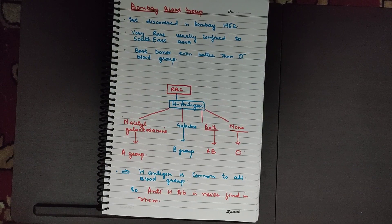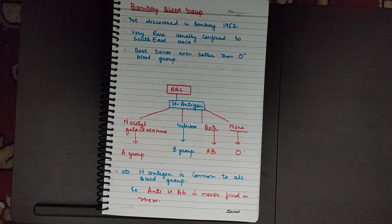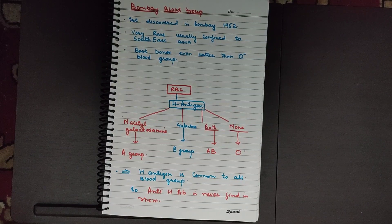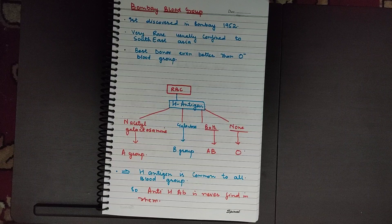The Bombay blood group was first discovered in Bombay in 1952, which is why it is known as the Bombay blood group. It is a very rare blood group, usually confined to Southeast Asia. It is actually the best donor — even better than the O negative blood group. In today's video we are going to discuss what the Bombay blood group is and what makes it special.